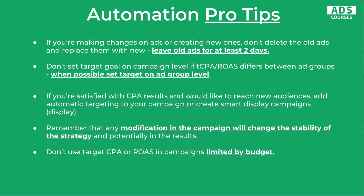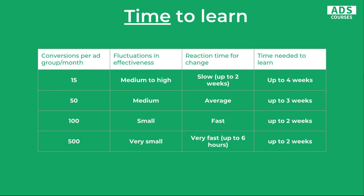Now the most important one: remember that any modification in the campaign will change the stability of the strategy and potentially the results, especially when your modifications are big. If you're decreasing or increasing your CPA or ROAS by more than 20%, it will restart the learning process — the machine learning starts from scratch — and that's something you don't want. The last tip: don't use Target CPA or ROAS in campaigns that are limited by budget; use the Maximize Conversions strategy or manual Enhanced CPC instead. As for how long the system takes to learn and stabilize — it depends on your conversion volume and how much data you're generating. The more conversions you generate, the faster the learning process.